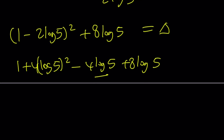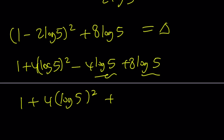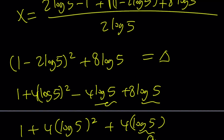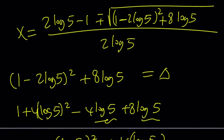Notice that the negative 4 log 5 and positive 8 log 5 combine to give 4 log 5, so the discriminant is 1 plus 4 log²5 plus 4 log 5. Calling log 5 as 'a', this is 4a² plus 4a plus 1 — a perfect square! It factors as (2 log 5 plus 1) squared. We started with a minus sign, but after adding the 8 log 5 it becomes positive.